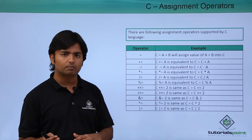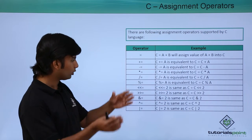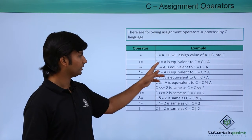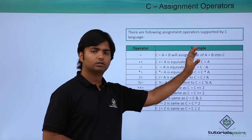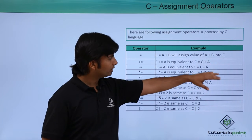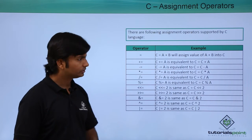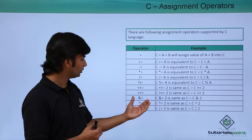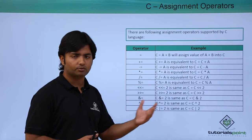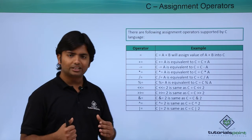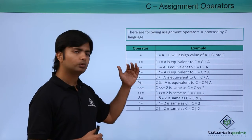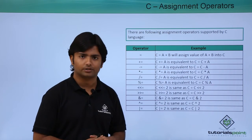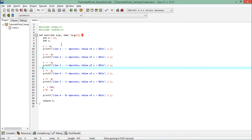The plus-equals-to operator will add two numbers and then assign the value to the left-hand side variable. For example, 'c += a' means c will be added to a and the result will be assigned to c. Similarly, minus-equals and all the other shorthand operators follow the same treatment. Let's see practically how to use these shorthand operators with the assignment operator.